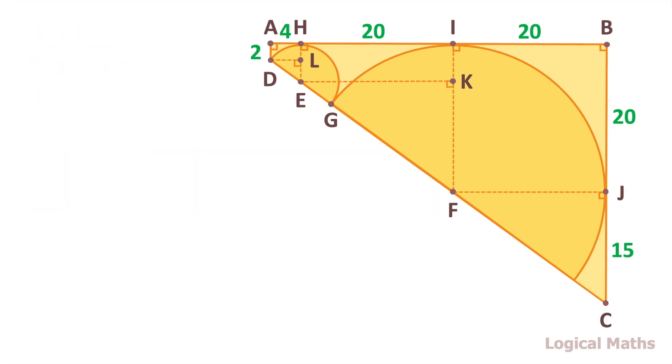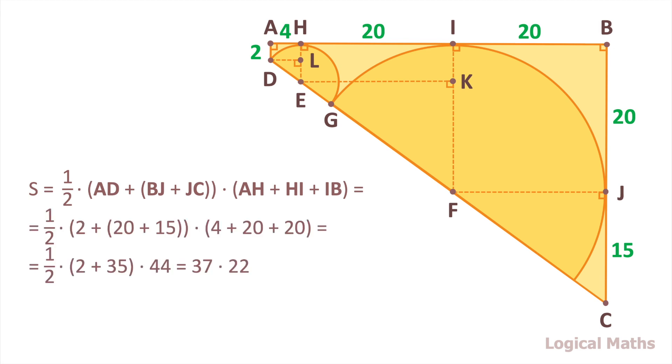Finally, we find out all the necessary lengths. So we can find the area of the trapezoid by substituting values in the formula. After simplification we get 37 multiplied by 22 which equals to 814. And that's the correct answer of the problem.